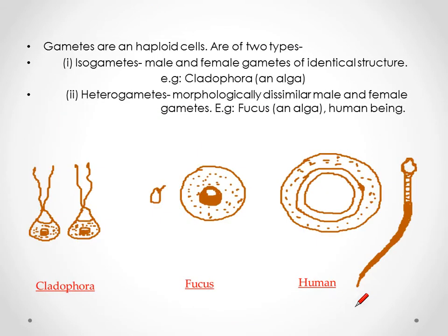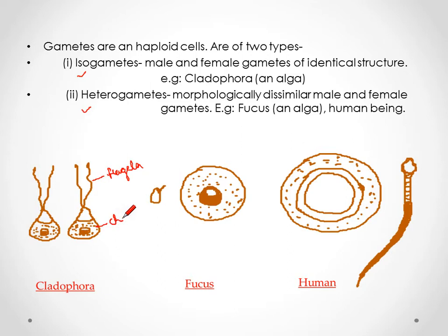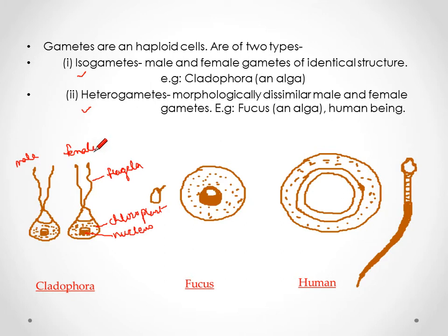Gametes are haploid cells of two types: isogametes and heterogametes. If the male and female gametes are identical in structure — for example in Cladophora, an alga — they are called isogametes. In heterogametes, the male and female gametes are morphologically dissimilar.